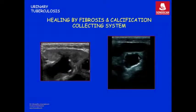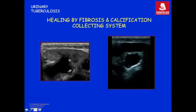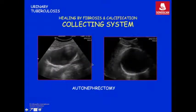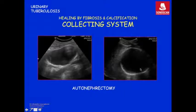Calcification can also happen in the collecting system. A high frequency scan shows hydronephrosis with urothelial thickening and tiny calcifications in the urothelium. Or the calcification may be more extensive, involving one large calyx. Rarely, it can involve the entire collecting system, making the kidney non-functioning — this is called tuberculous autonephrectomy. Two cases show calcification of the entire hydronephrotic sac.